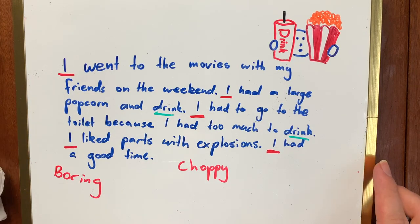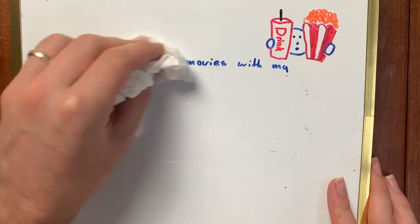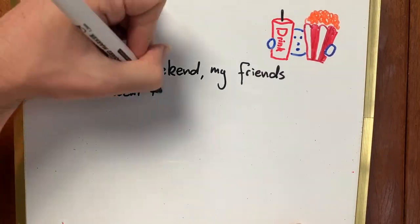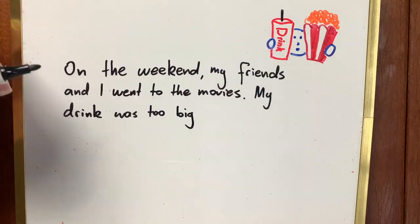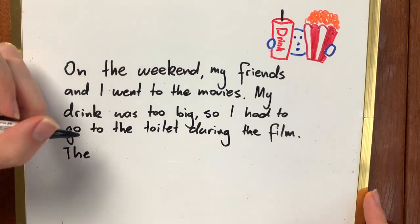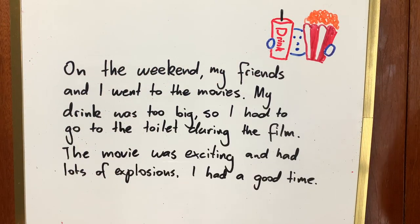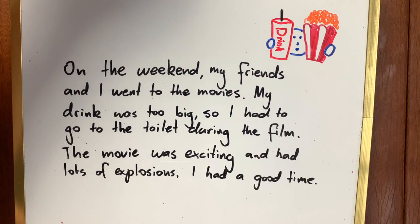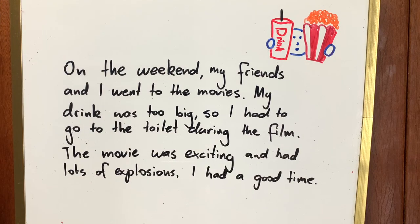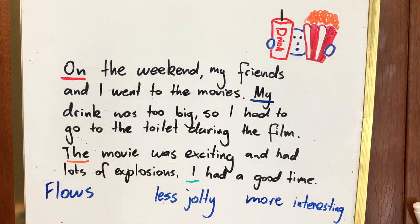Let's take the same ideas from each sentence, but rewrite it with varied openings in mind. 'On the weekend, my friends and I went to the movies. I got a large popcorn and drink. My drink was too big, so I had to go to the toilet during the film. The movie was exciting and had lots of explosions. I had a good time.' I shared the same information with almost the same word choice, but by changing the starts of my sentences, I have made it flow more easily and smoothly.